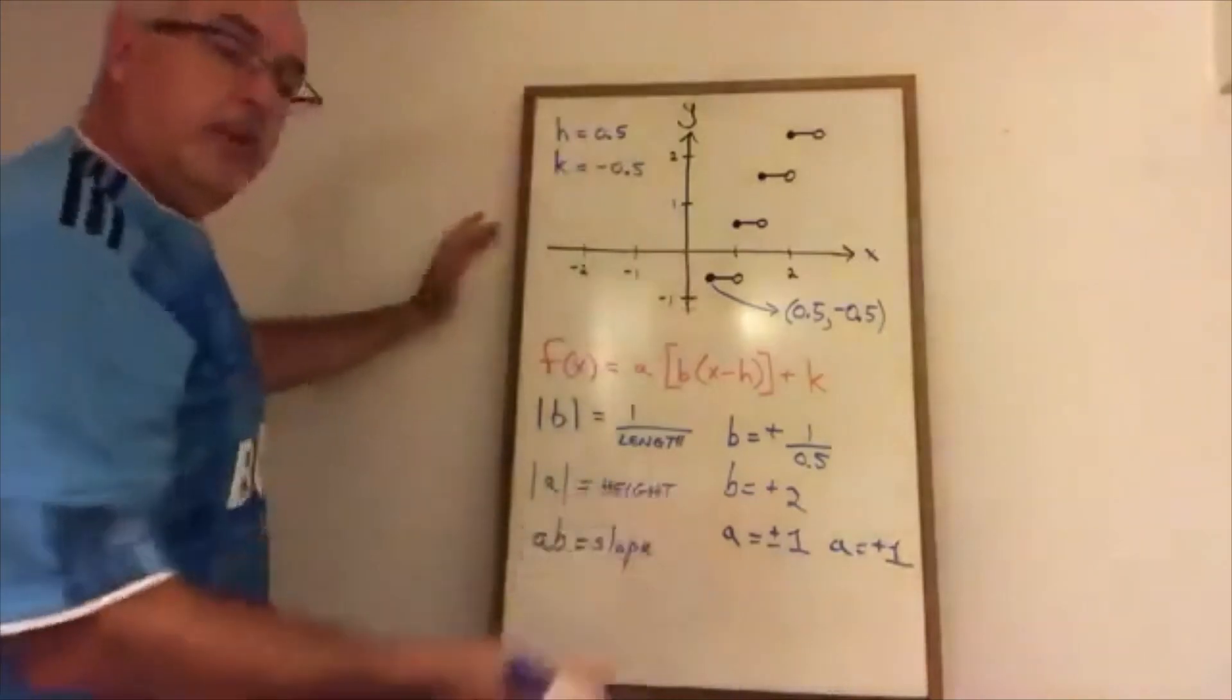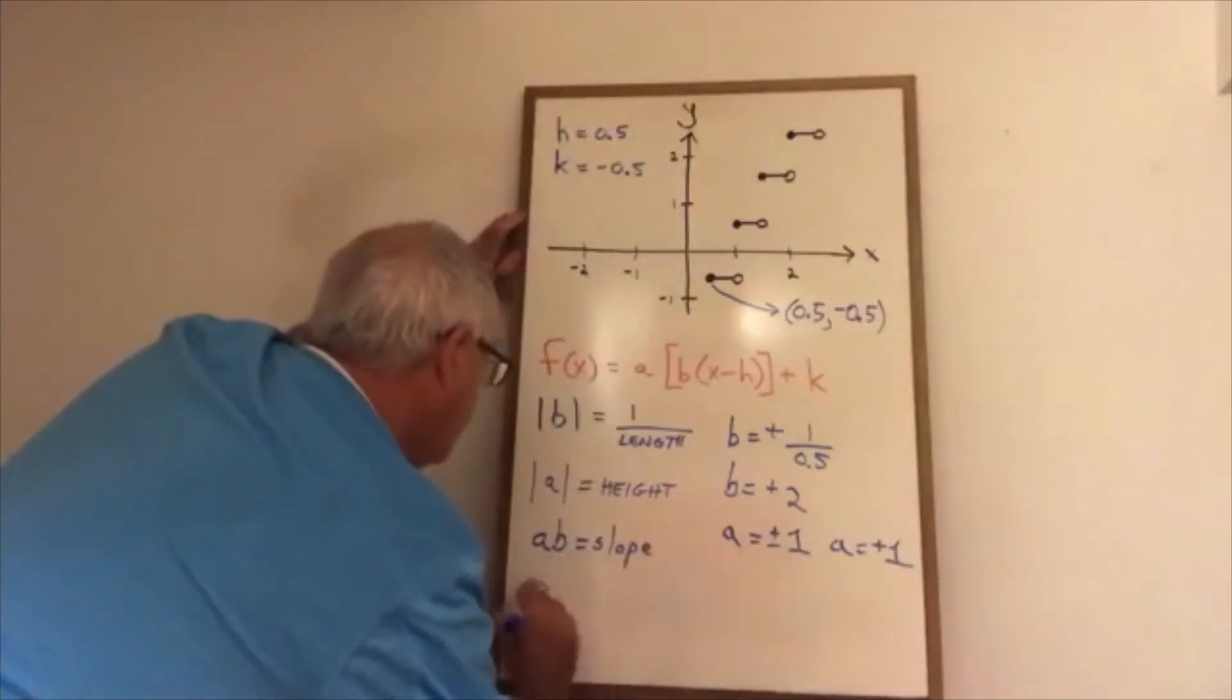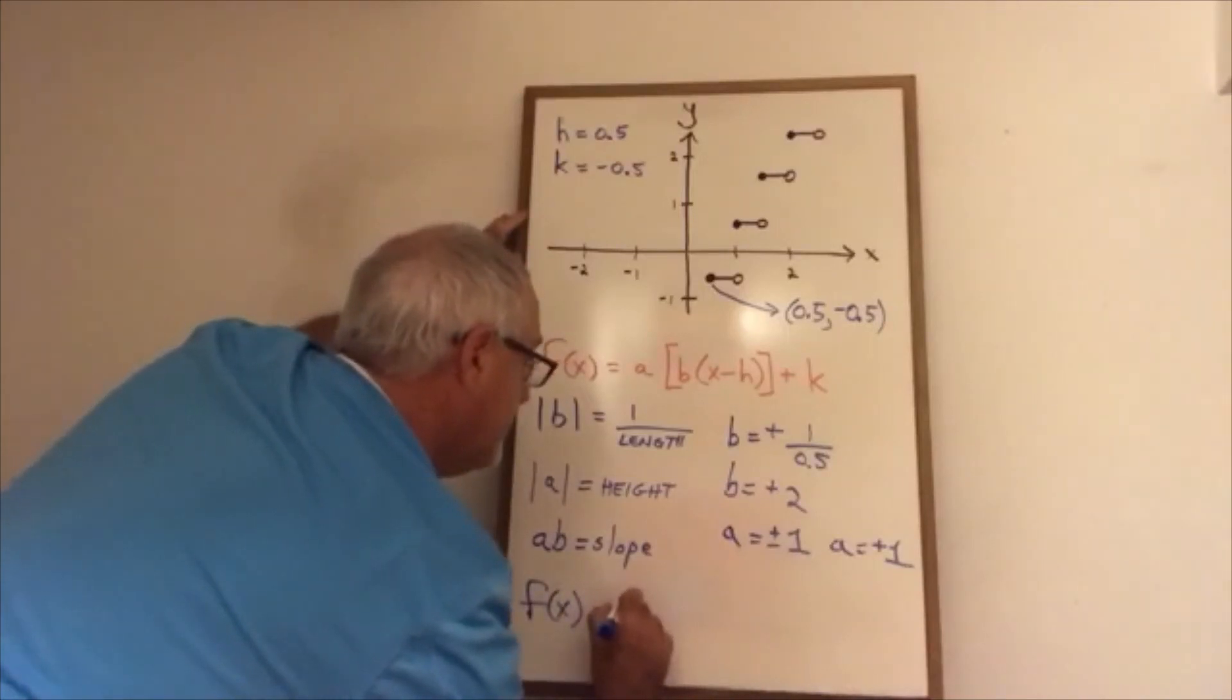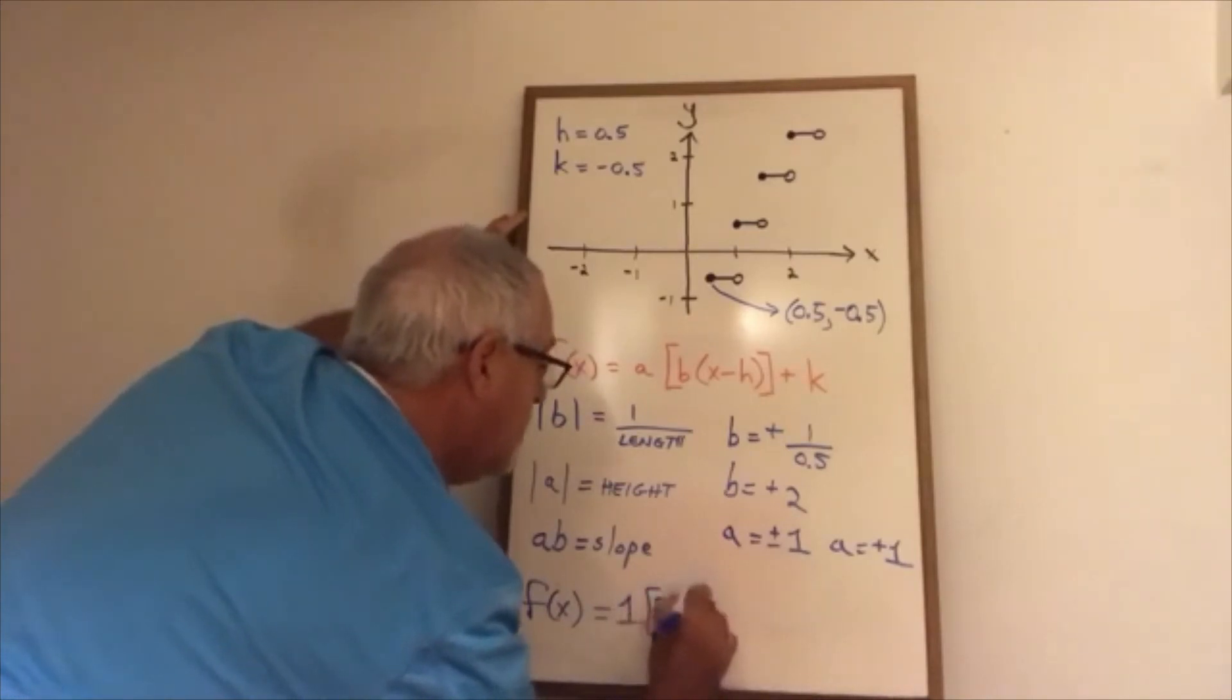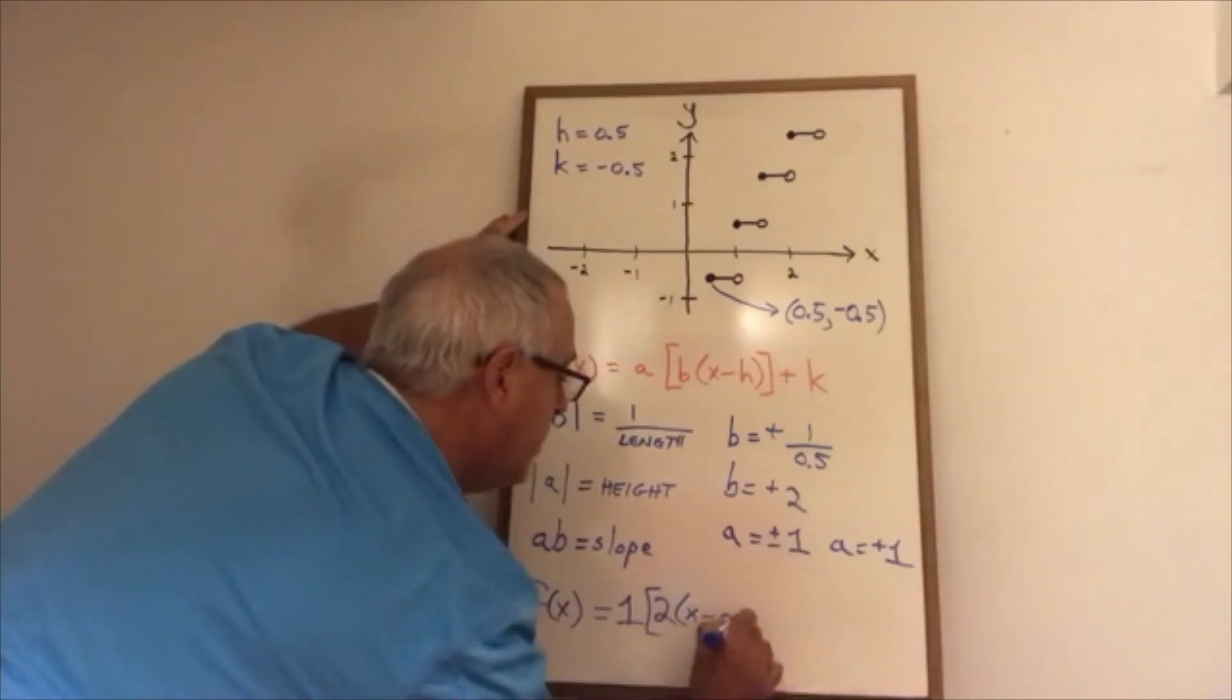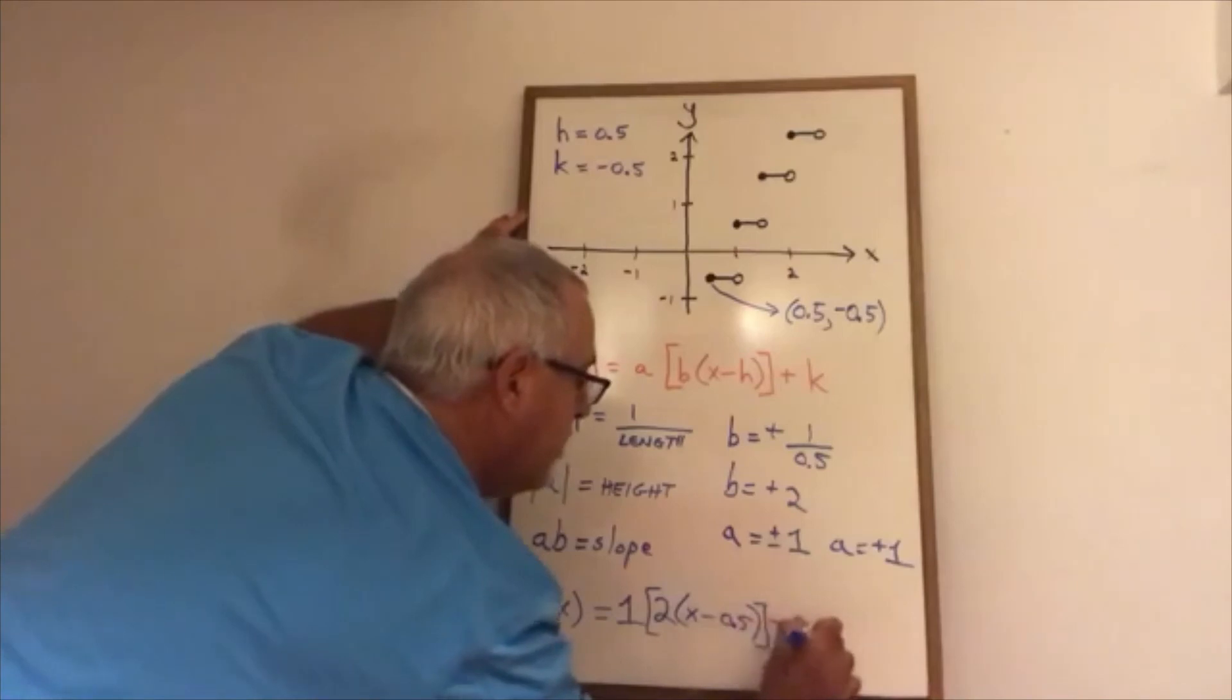And I have all my parameters. I can write out my equation. A is 1. B is 2. H is 0.5. And k is negative 0.5.